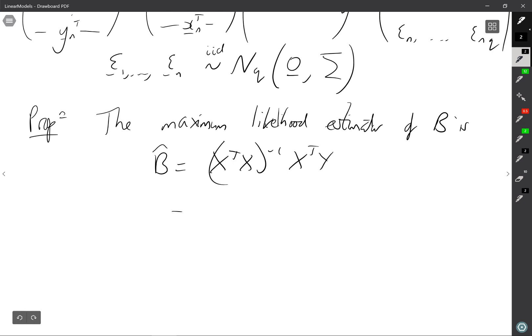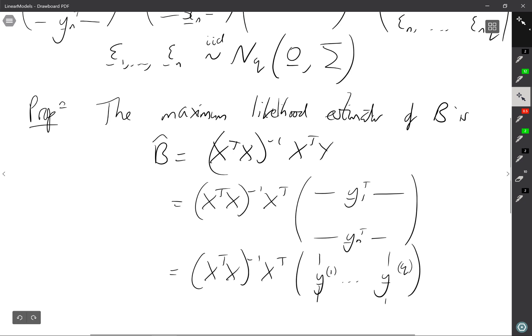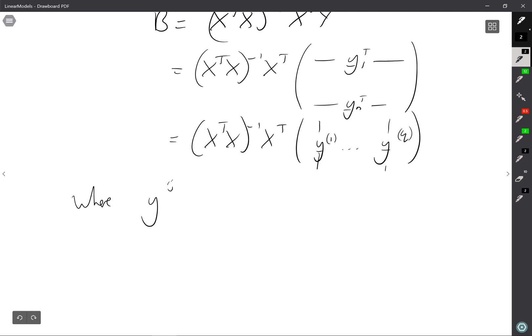But what I want you to note is that if we write in what Y looks like here, we had this was y1 transpose down to yn transpose. Well, let's write it in terms of the columns instead. So this is (X^T X)^{-1} X^T, and let's have this as y1 to yq, where yj is y1j down to ynj, this is the jth column of Y.